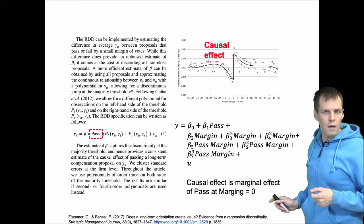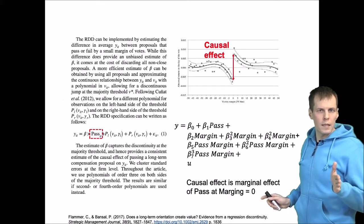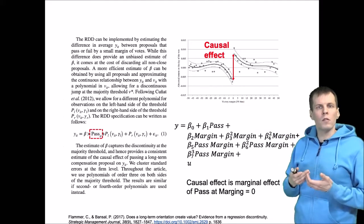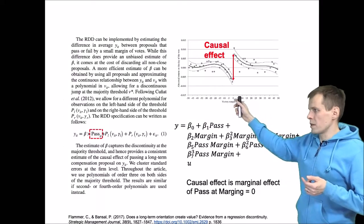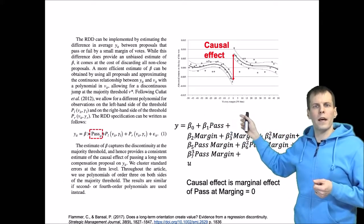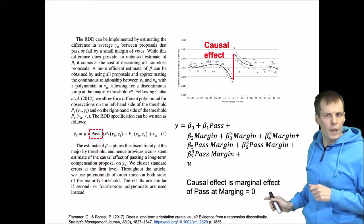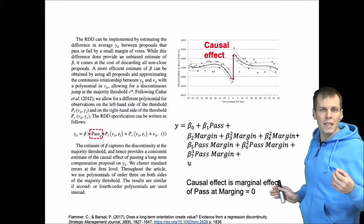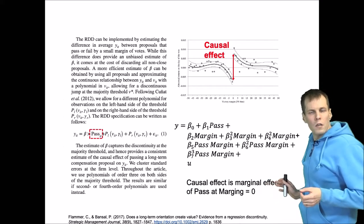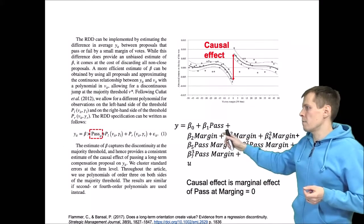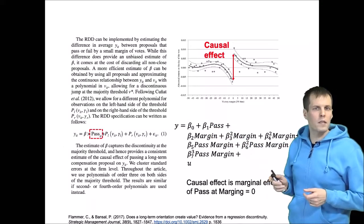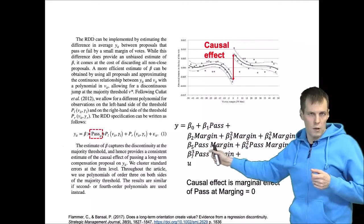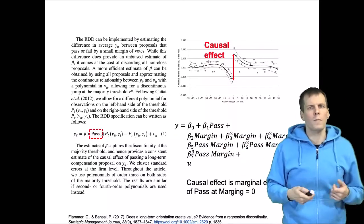The causal effect is the marginal effect of 'pass' at margin equals zero — where passing is zero means it passed and a negative number means it didn't pass. In some scenarios, the cutoff may be something other than zero: if using actual vote share rather than margin, the cutoff would be 50, and the causal effect would be the marginal effect at vote share equals 50 for 'pass.' In practice, it's easiest to convert your data so the cutoff is at zero, in which case beta-one directly gives the causal effect.